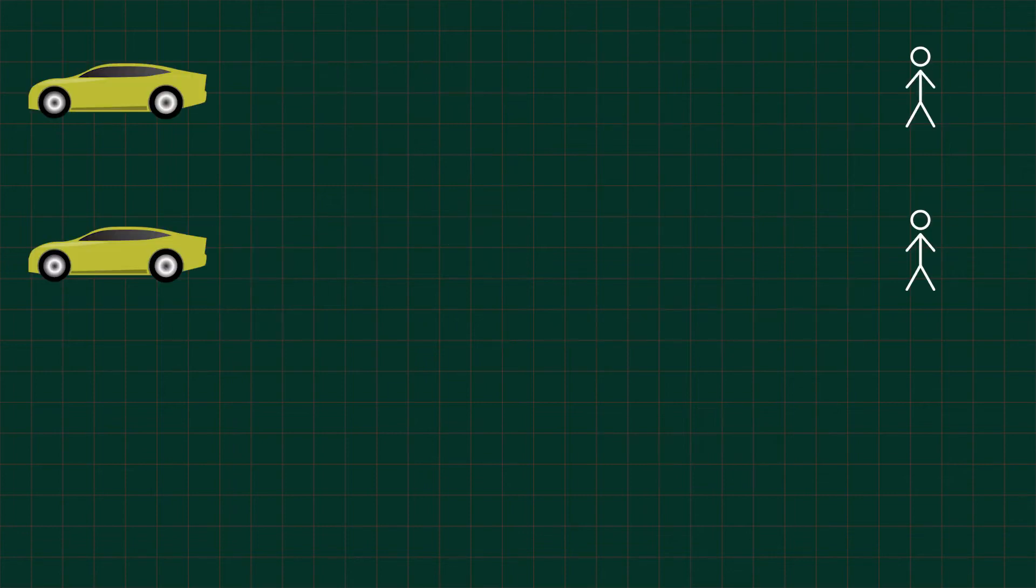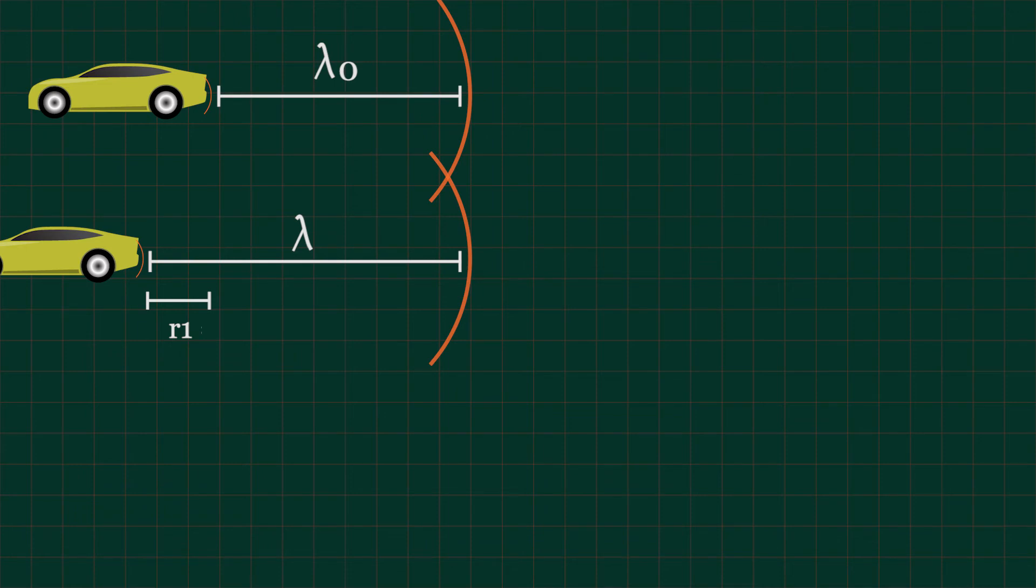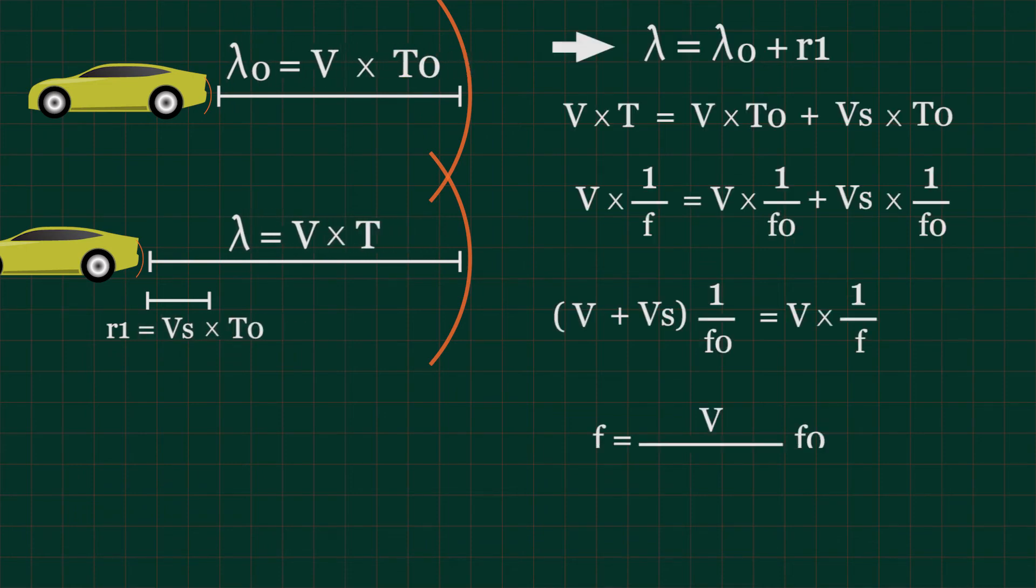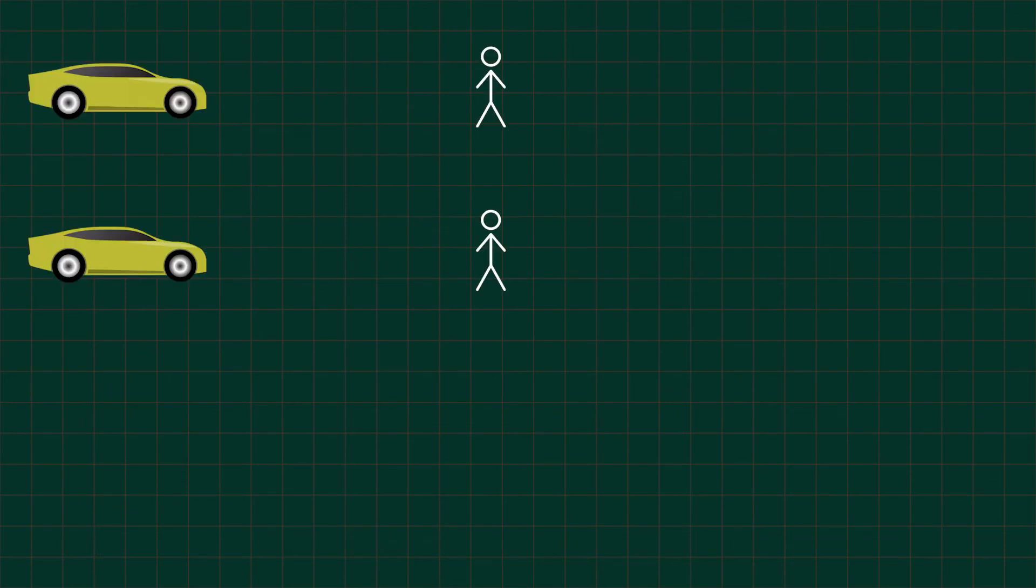Now we will move to the second scenario. We have the car move in the opposite direction. By using the same mathematical computation, we will get this formula. The first and second scenarios are relatively similar, now we'll move on to the third scenario.